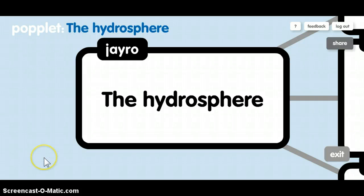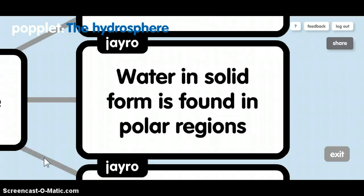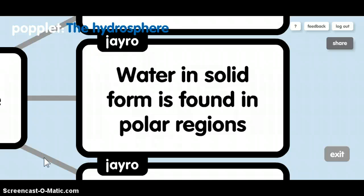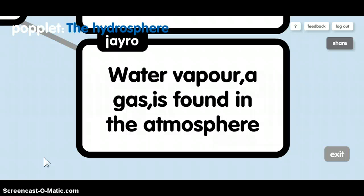The hydrosphere. Water in liquid form covers most of the Earth's surface. Water in solid form is found in polar regions. Water vapor in gas form is found in the atmosphere.